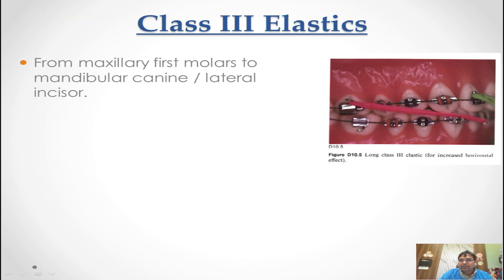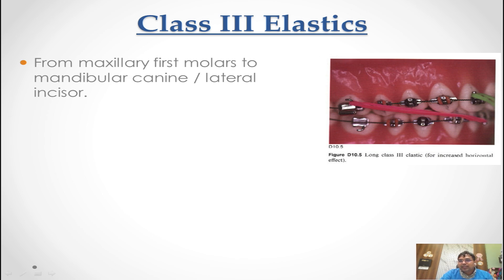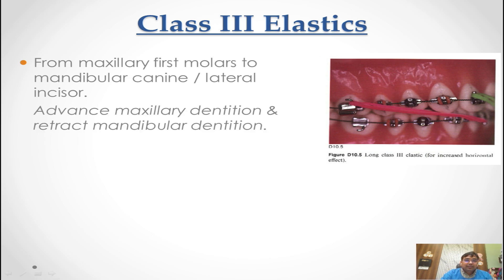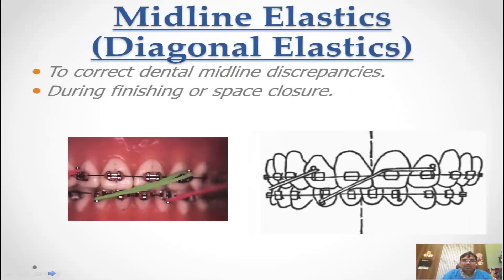Class 3 elastics run from the upper molar to the lower canine. The long class 3 elastic increases the horizontal effect. If you put this elastic from first molar to second molar it increases the horizontal component further. For more horizontal effect, attach as posteriorly as possible; for more vertical component, use a short class 3 elastic. Class 3 mechanics cause forward movement of the mandibular dentition and backward movement of the maxillary dentition.